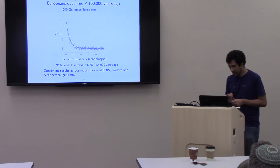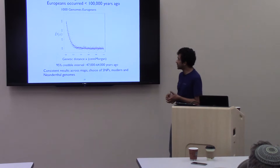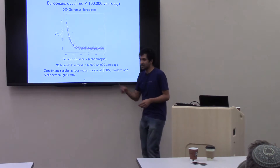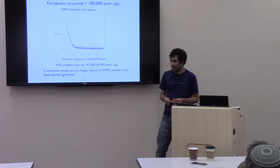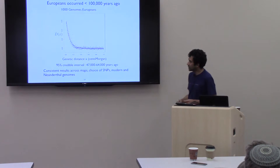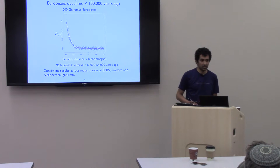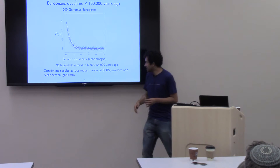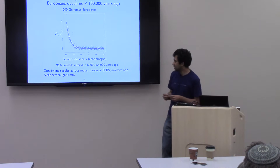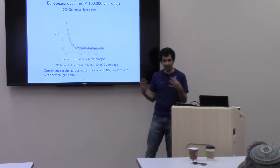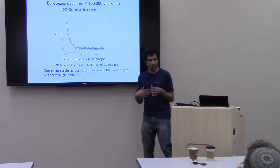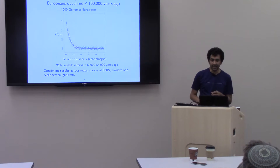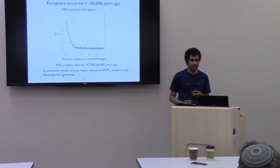We applied this model to European individuals from the 1000 Genomes Project. When you plot the covariance against genetic distance, you see this exponential decay. Fitting the model and estimating the time of admixture gives an estimate of around 50,000 years ago, with a credible interval of roughly 47 to 64,000 years. We also assessed robustness by using different Neanderthal genomes, different recombination maps, different SNP choices, and different human genome data sets, finding consistent results across these choices.